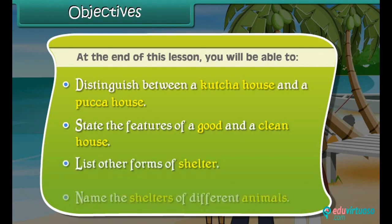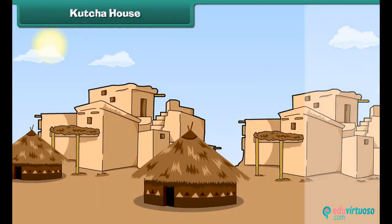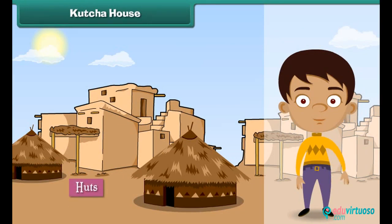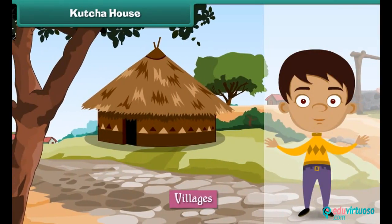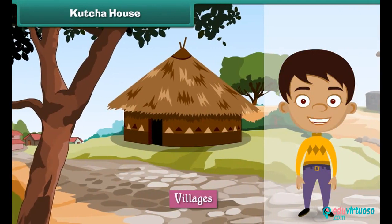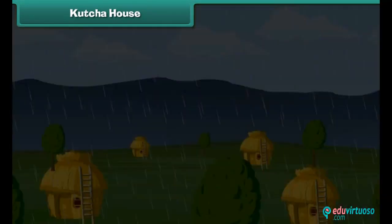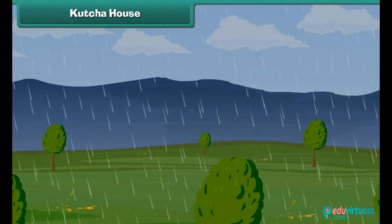Houses made of mud, grass, straws and leaves are kacha houses. They are also known as huts. Kacha houses are found in villages. They are cheap and easy to build. But kacha houses cannot face storms, heavy rains and earthquakes, and get destroyed.